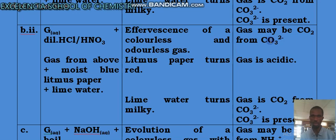And when you test the gas using the litmus paper, it will turn red, showing that the gas is acidic and the lime water will turn milky, confirming that the gas is CO₂ from CO₃²⁻ and that CO₃²⁻ is present. And then we continue.